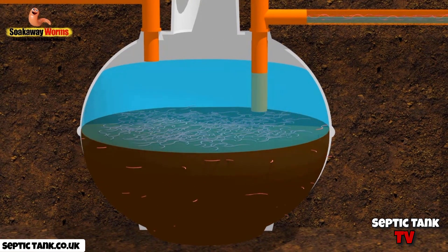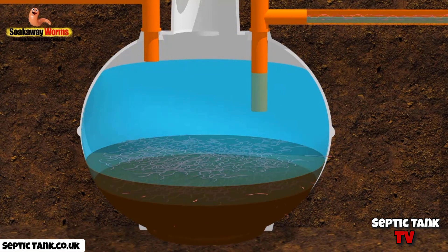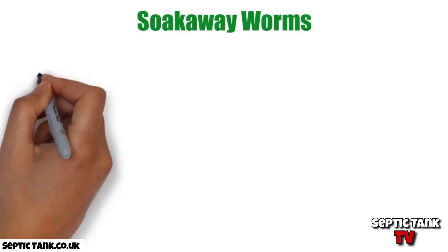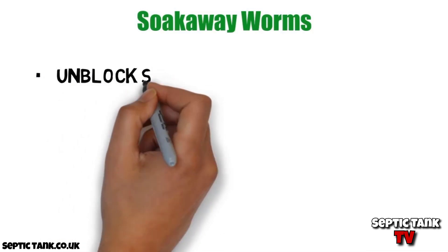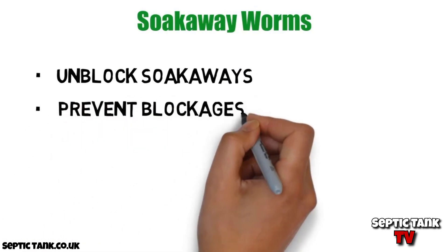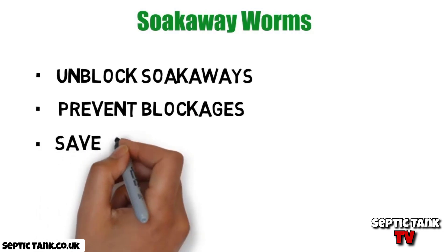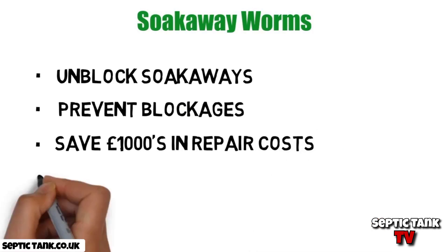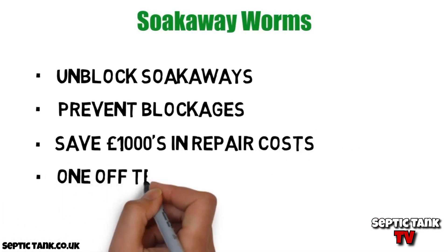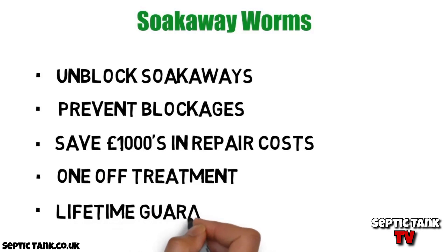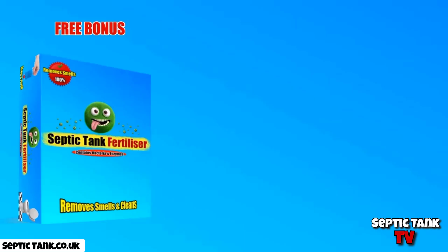Soak away worms will also save you hundreds of pounds in septic tank emptying costs. Because they eat all the fat, grease, and sludge in the septic tank, you never need to get it emptied again — there's no sludge left to suck out. Soak away worms prevent blockages from ever occurring again, save you thousands in repairs and emptying costs, are easy to install, and are a one-off treatment that also comes with a lifetime guarantee.